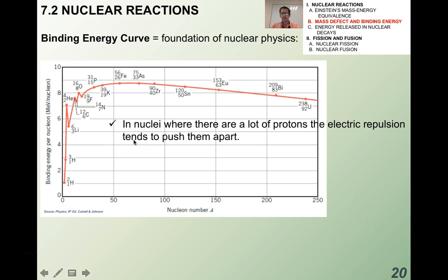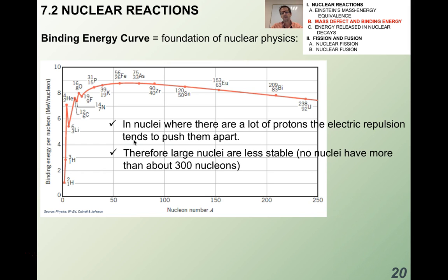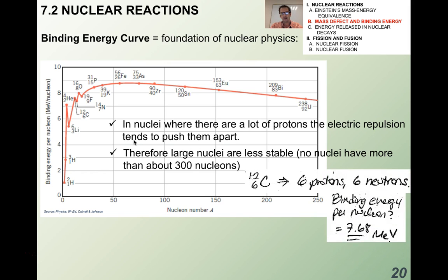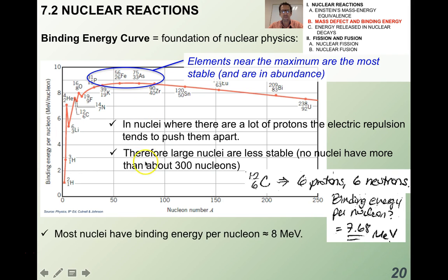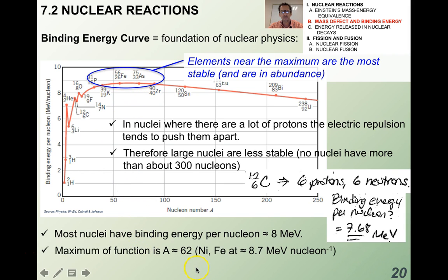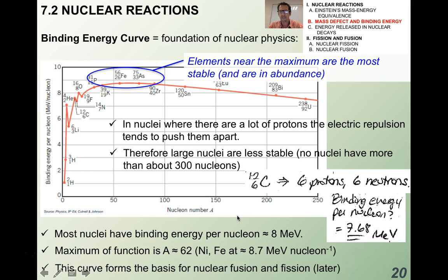In nuclei where there are a lot of protons, electric repulsion tends to push them apart, so large nuclei tend to be less stable. It's not possible for a nucleus to have more than about 300 nucleons at all. Carbon-12 had a binding energy per nucleon of 7.68 MeV. Elements near the maximum of this curve tend to be the most stable and most abundant. Most nuclei have a binding energy per nucleon of about 8 MeV on average. The maximum is at A equals 62 — nucleon number 62 — which is nickel and iron. This curve forms the basis for nuclear fusion and fission.